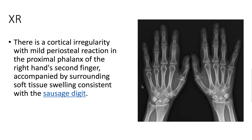On x-ray, we see cortical irregularity with mild periosteal reaction in the proximal phalanx of the right hand, the second finger, accompanied by surrounding soft tissue swelling consistent with a Sausage Digit.